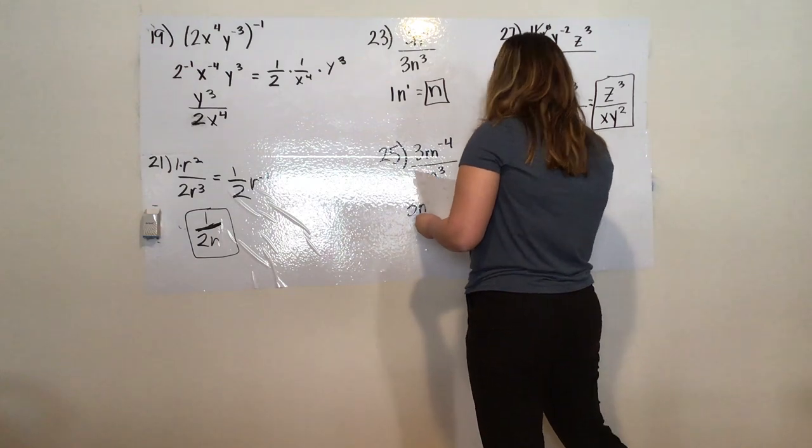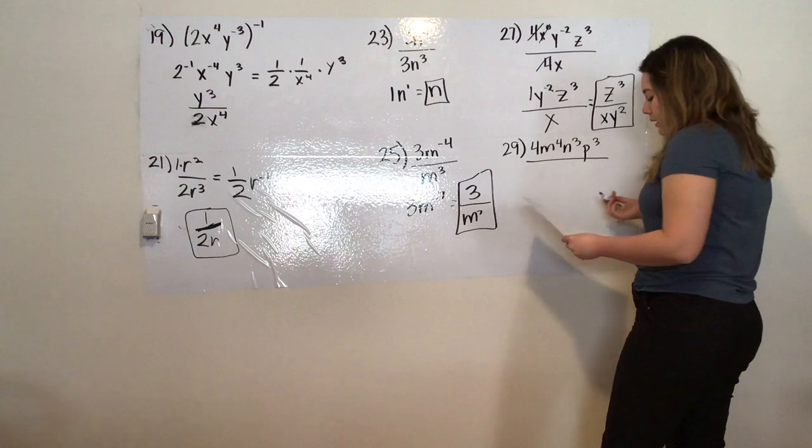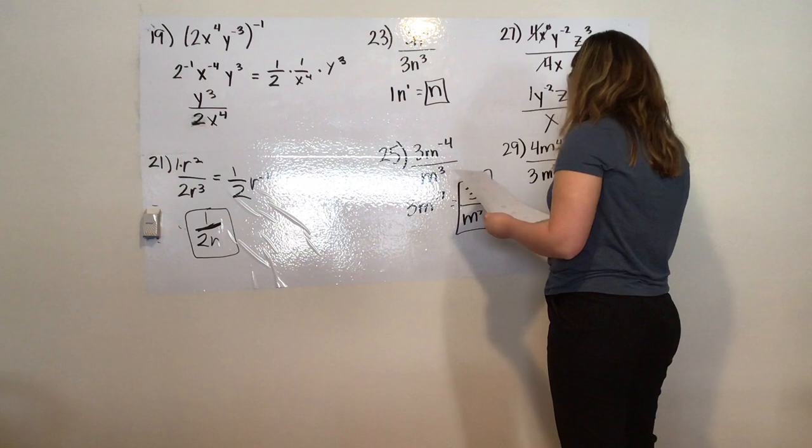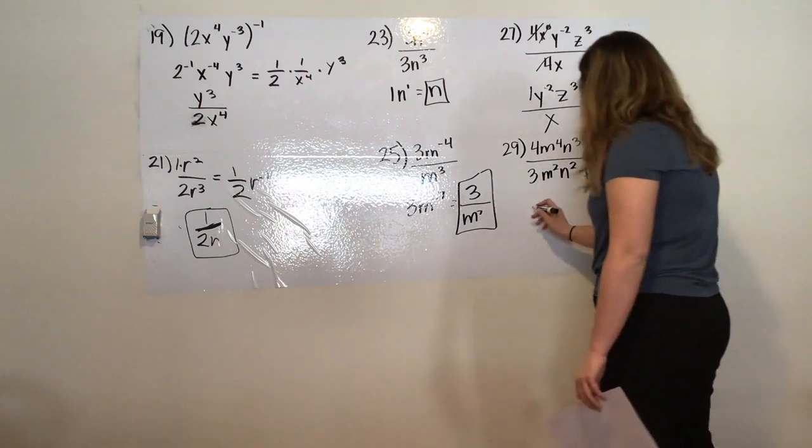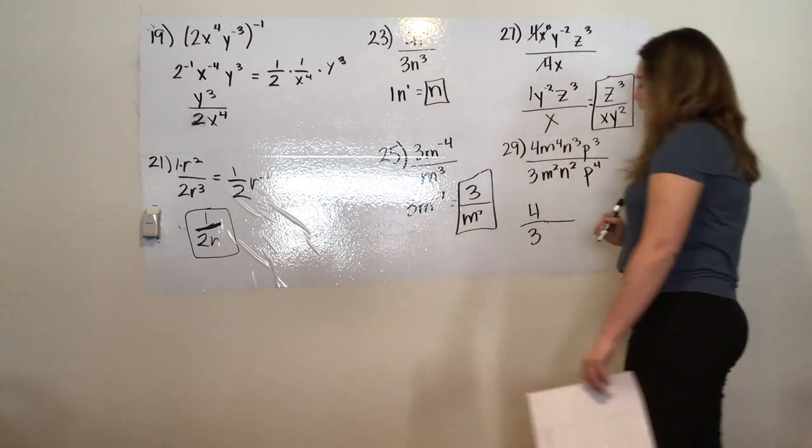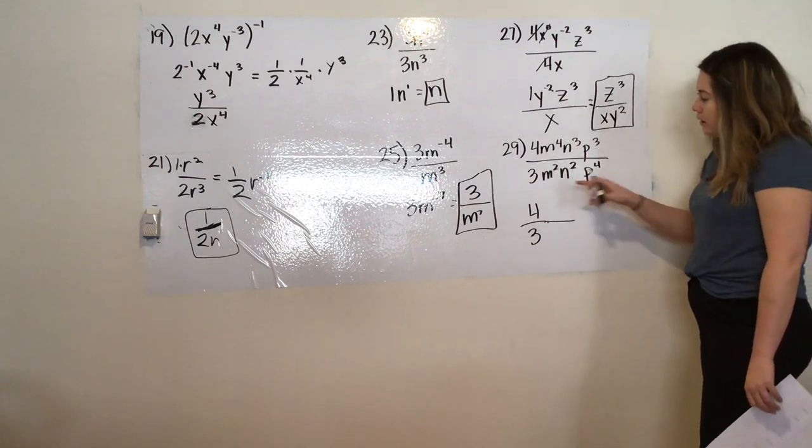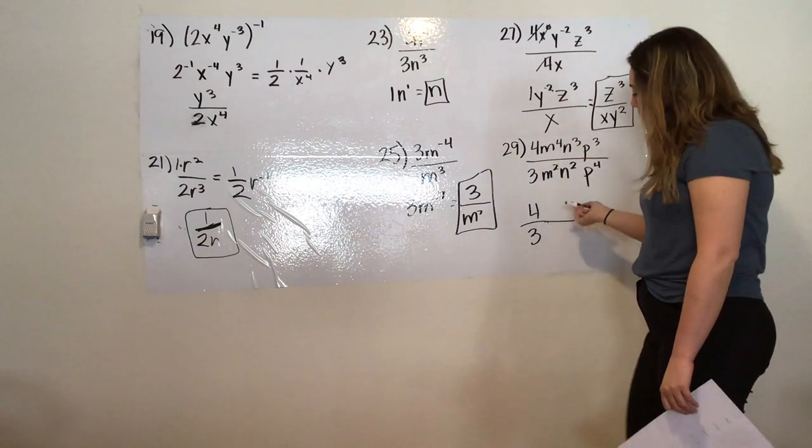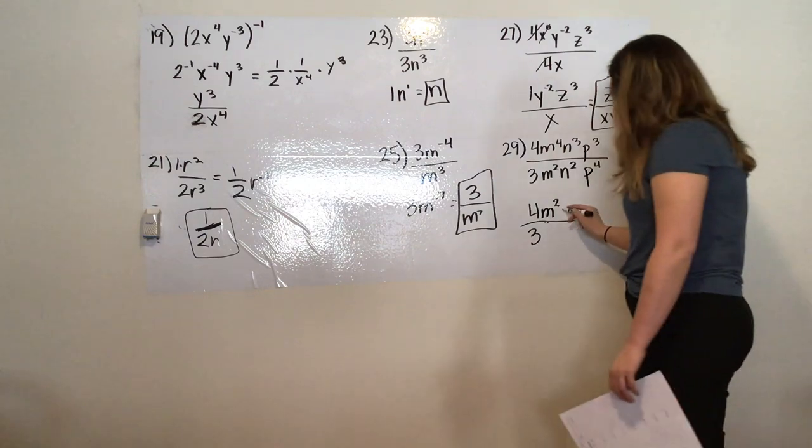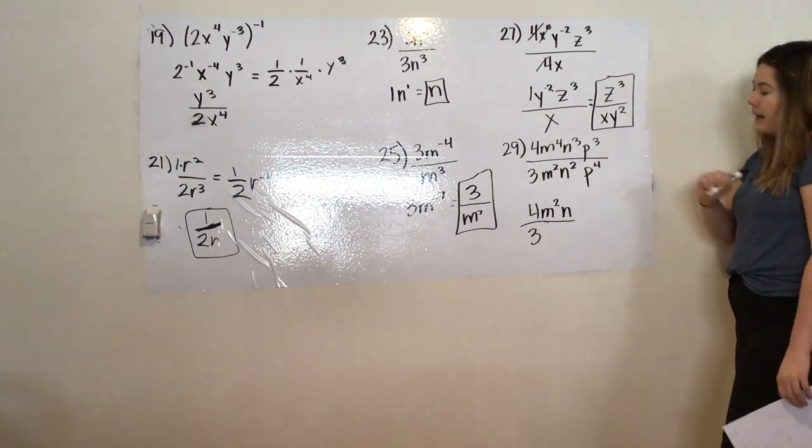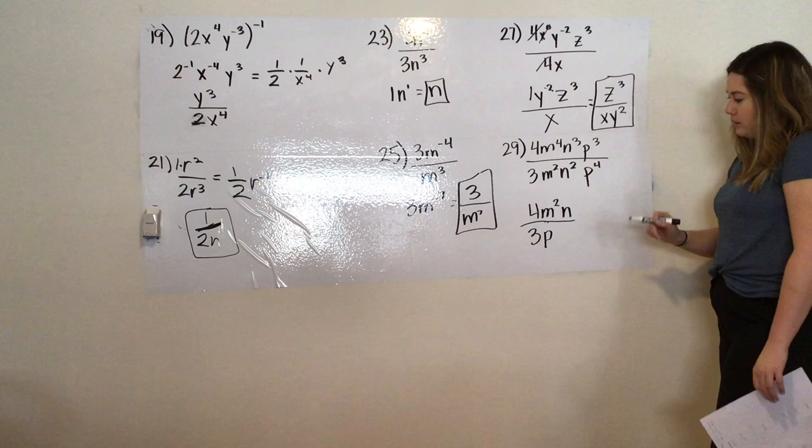And then last one, 29. 29 seems a little daunting, but again, we're just applying the rules to the numbers or the variables that contain the same base. You can notice they're all written in alphabetical order. However, 4 thirds can't be simplified any further, so it's going to stay as such. I'm just going to kind of extend my fraction more because I know that some of it's going to contain other variables. So I have the m's now, m to the power of 4 over m squared, so I subtract my powers, so I get a positive m squared. With the n's, I'm just subtracting 3 minus 2, which is just n. And I'm going to notice that 3 minus 4 is negative 1, which we know p to the negative 1 is going to be a positive p in the denominator.